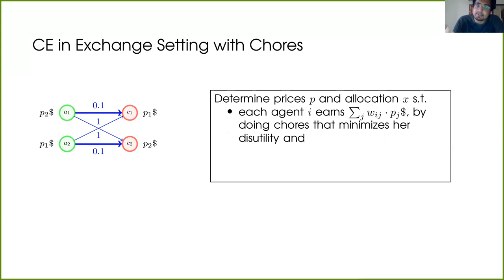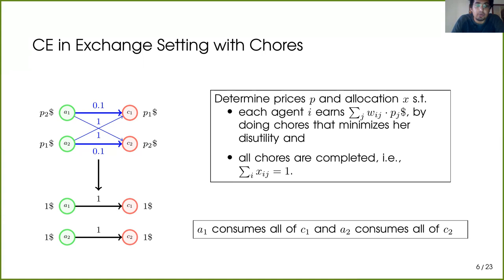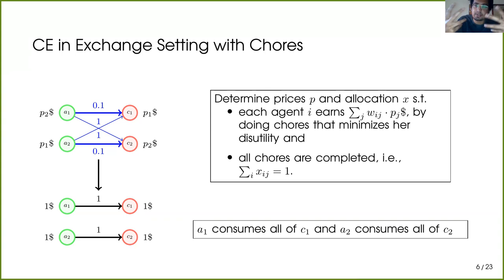As in the goods case, each agent has an optimal bundle of chores at any price vector. What makes competitive equilibrium prices special is that while each agent consumes only their optimal chores, all the chores are allocated — demand equals supply. In our example, one such price could be one dollar each for C1 and C2: agent A1 earns one dollar by doing C1 entirely, and agent A2 earns one dollar by doing C2 entirely. The agents effectively exchange their chores, and competitive equilibrium is the most efficient way to do this at larger scale with heterogeneous disutility functions.